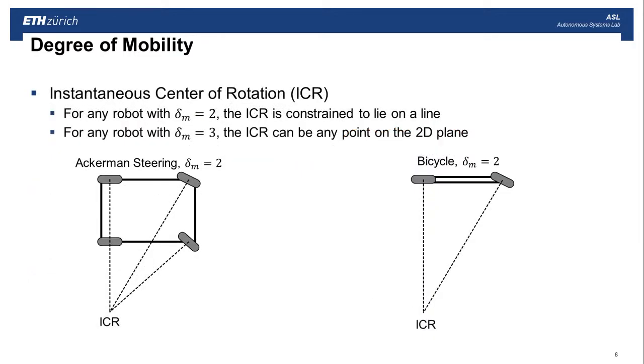For any robot with the degree of mobility 2, the instantaneous center of rotation is constrained to lie on a line. And here are two examples of that. So the Ackermann-steered vehicle, like a standard car, you can see all of these no-slip, no-sliding constraints converge at a single point, which is the instantaneous center of rotation. And the same thing with a bicycle. They all converge here. And for both of these, because the back wheel is fixed, these back wheels are fixed, the instantaneous center of rotation will always lie somewhere along this line, or this line in the case of the bicycle.